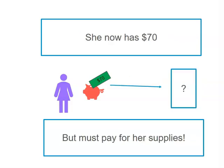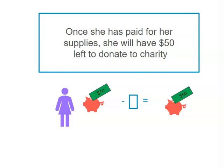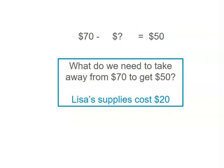She now has to pay for her supplies and we don't know how much she has to pay. But we do know that after she's paid for her supplies she'll have $50 left to donate to charity. So $70 subtracting her costs will leave her with $50. What are we subtracting from $70 to get $50? Well, $70 subtract $20 gives us $50. So the second part is Lisa has $70, takes away $20 to get $50. She had $70 after her parents gave her money, she took $20 off to pay for her lemonade, and was left with $50. So our missing figure is $20 — the supplies cost $20.